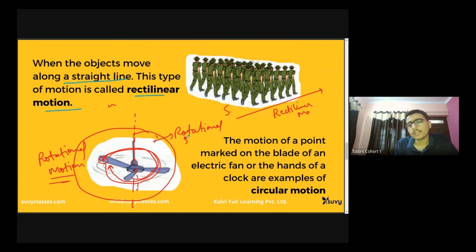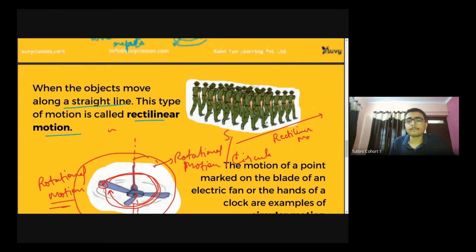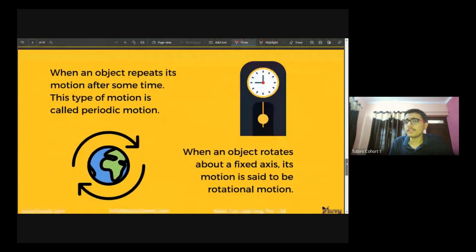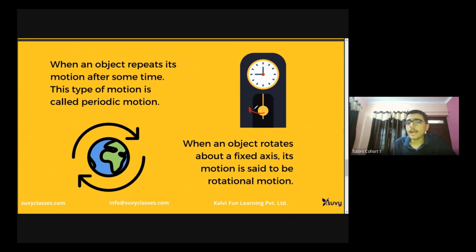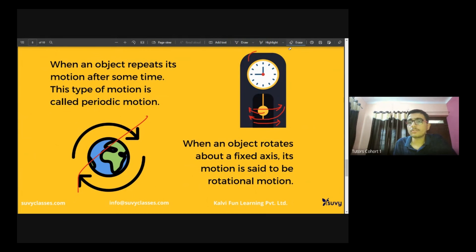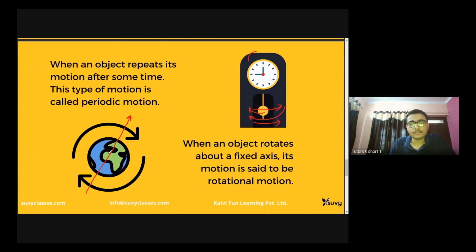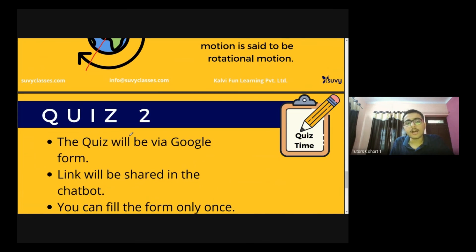Similarly, Earth is doing rotational motion — rotating about its own axis — and also circular motion as it revolves around the Sun. Periodic motion, as in the pendulum of a clock, is a motion that repeats after some time. Rotational motion: something rotates about its own axis, like Earth rotating about its own axis. That completes this topic.